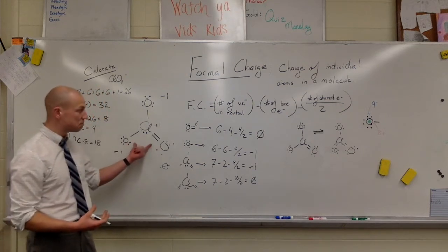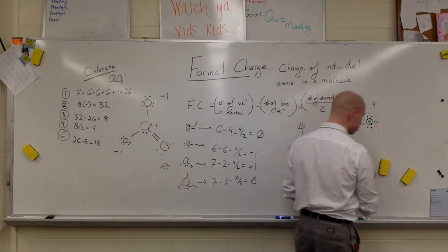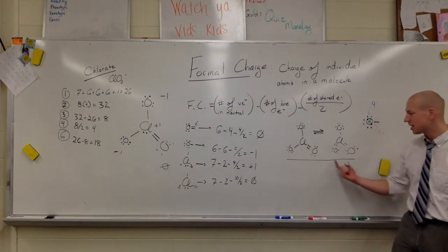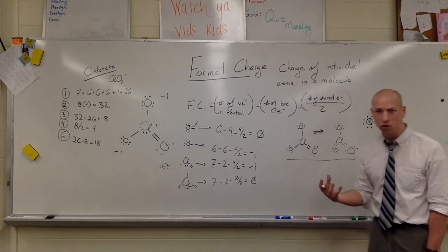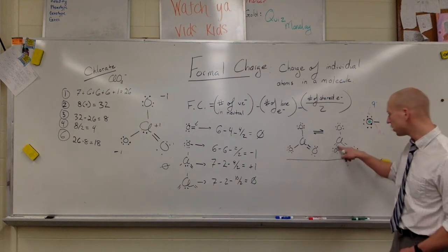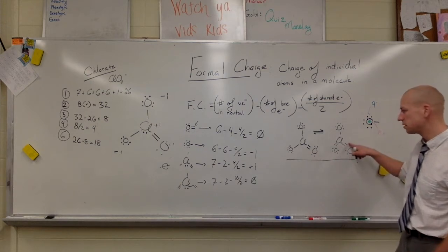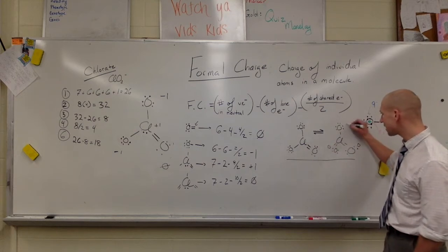So if we were to change it from this shape to this shape, and these are called resonant structures, this compound bounces back and forth between these. What we're really looking for is which one it occurs in more often. Listen, if this were a double bond and a double bond, this would be zero, this would be zero, this would still be negative one.